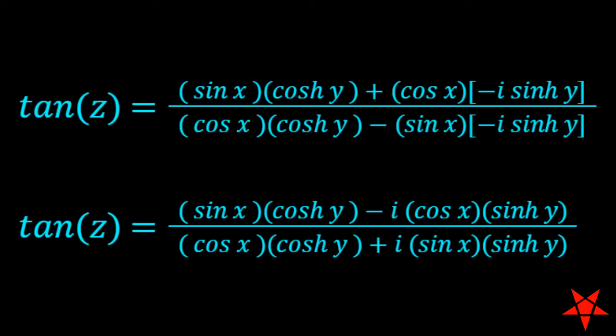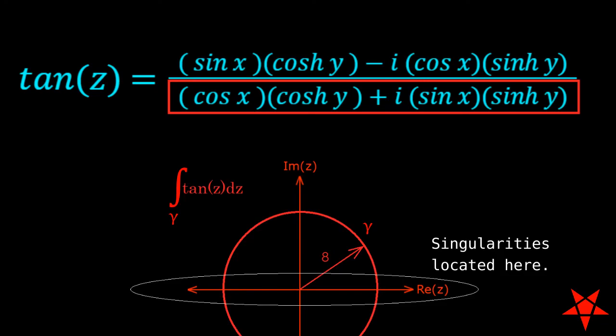So both the numerator and the denominator of tangent of z by themselves are analytic everywhere in the complex plane. Focusing on the denominator, we see that the only places where it goes to zero are on the real axis.